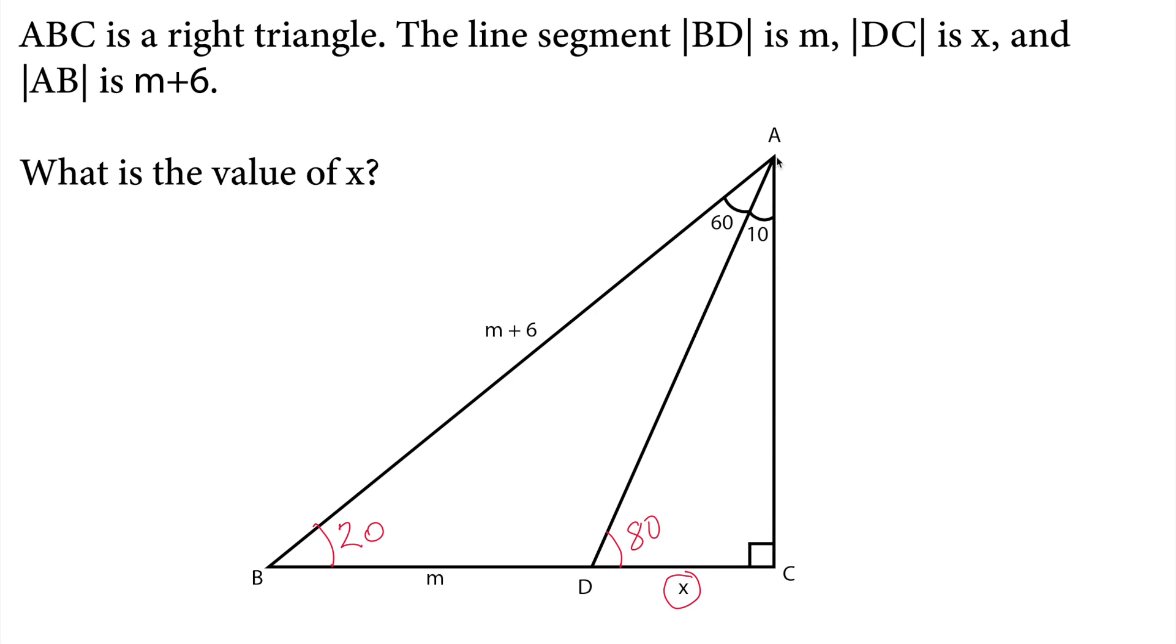So one line should be like this and the other one should be an extension of the base. So this should be another new triangle. So in this triangle, this triangle indeed is an isosceles triangle.